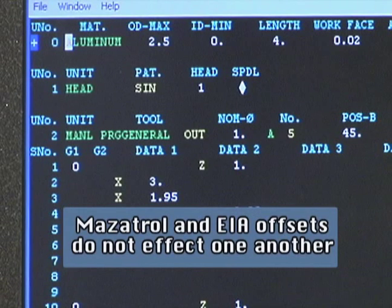MasaTroll and EIA offsets do not affect one another. For example, an offset on the MasaTroll side is not applied if an EIA program is running.